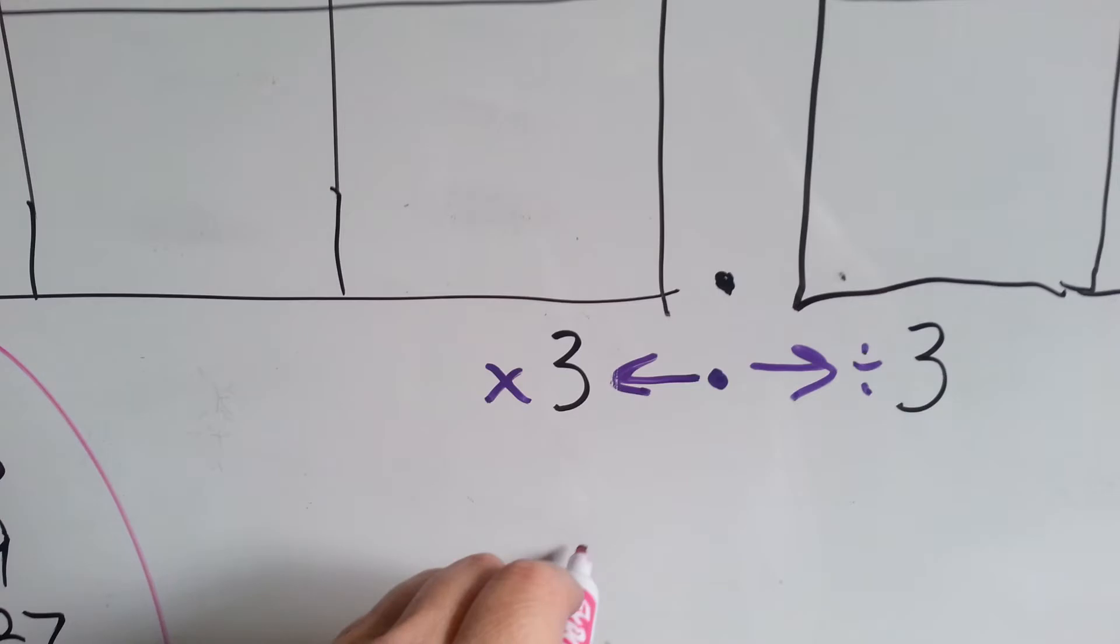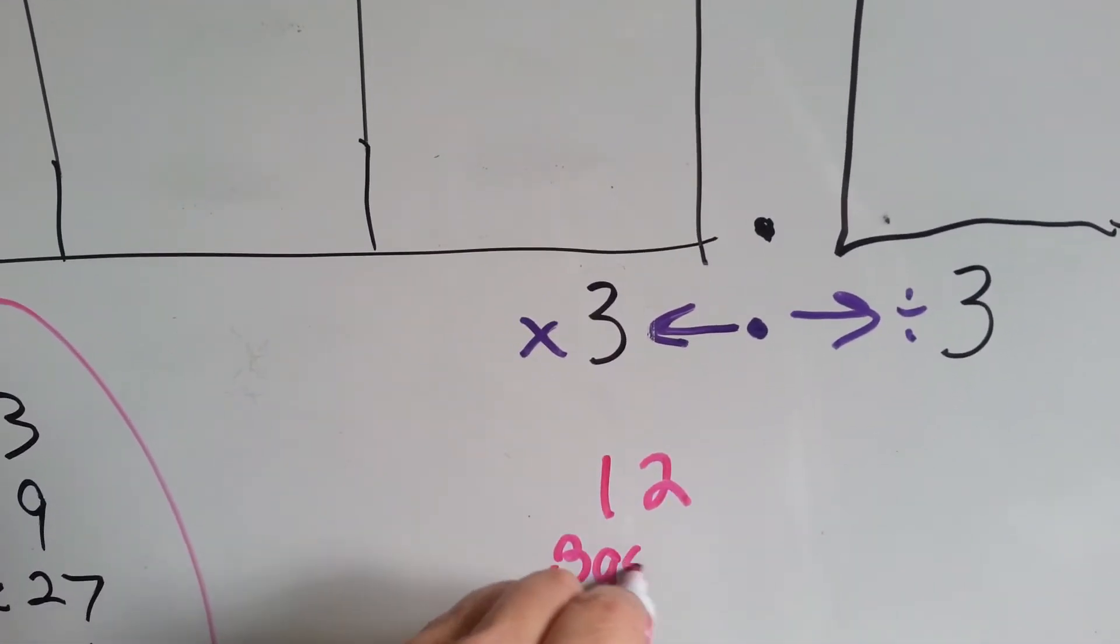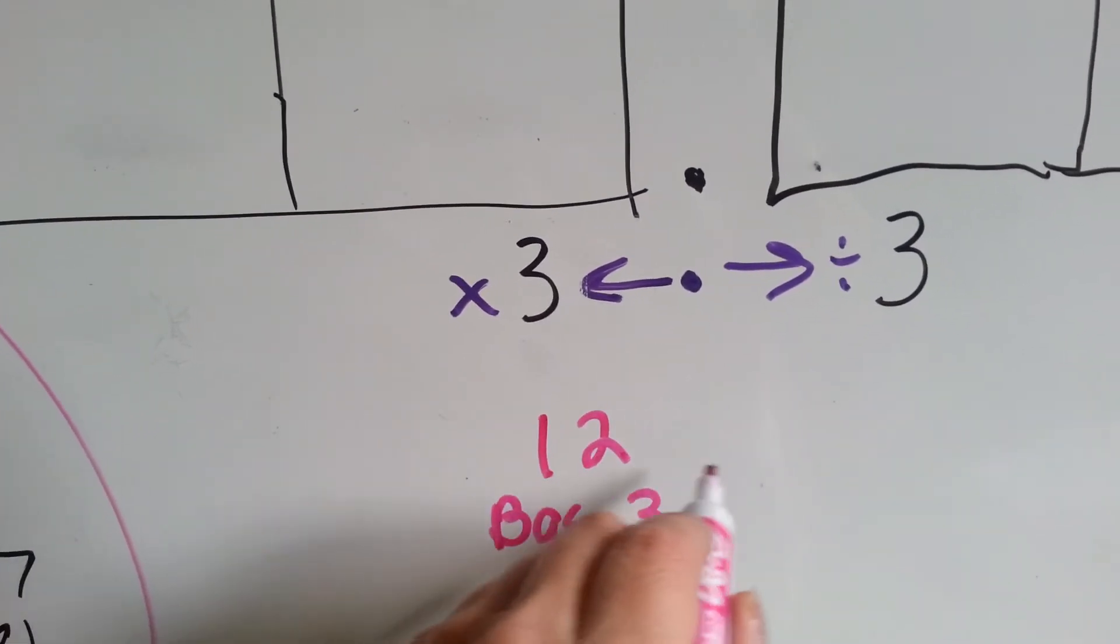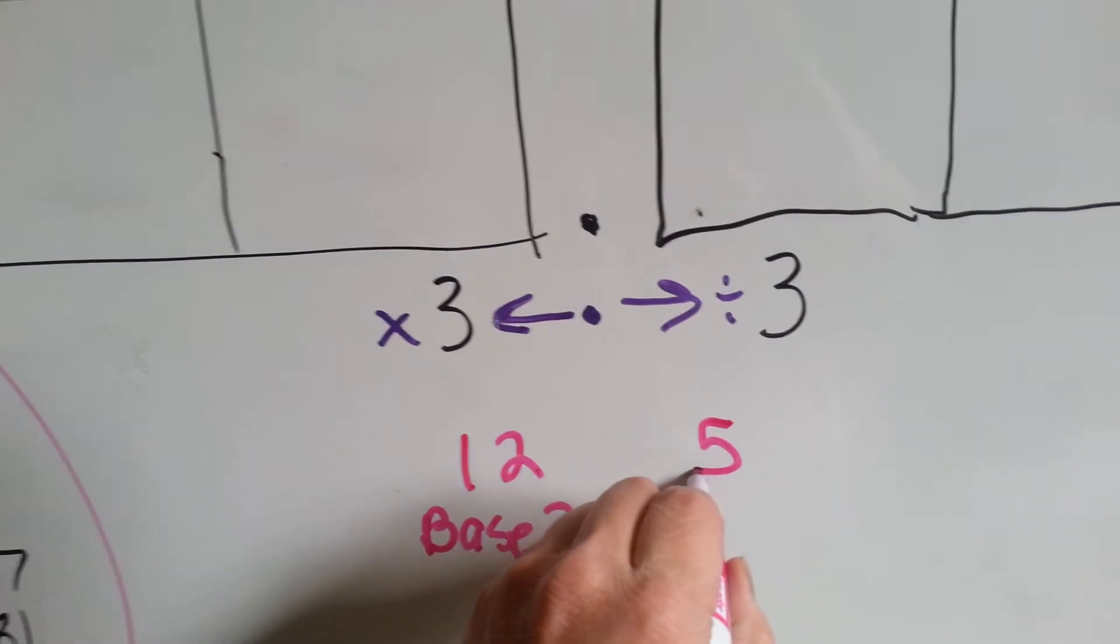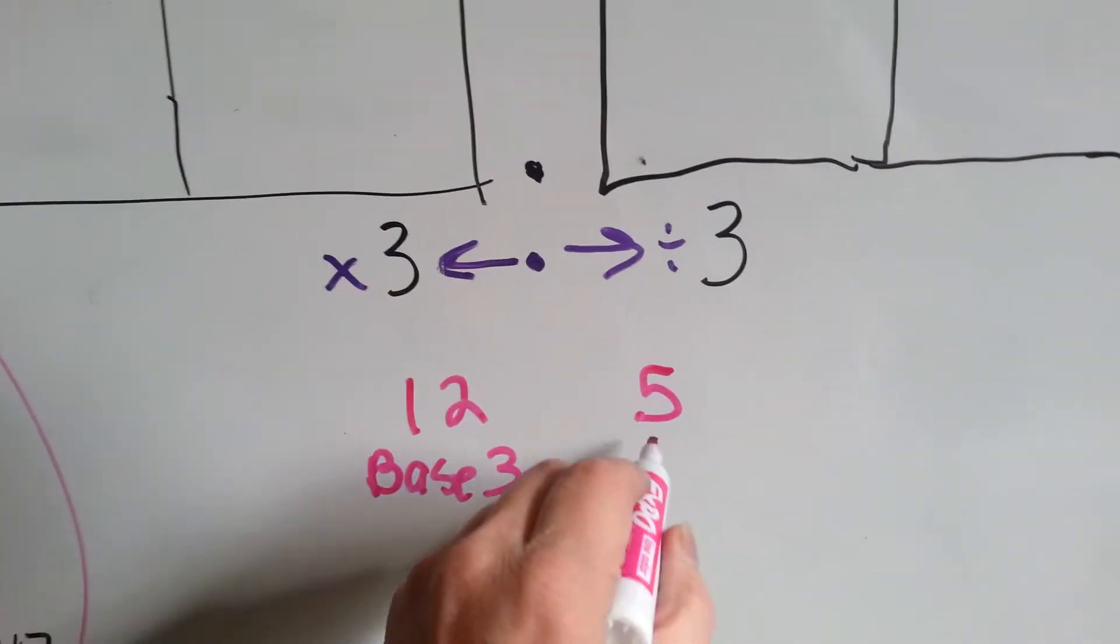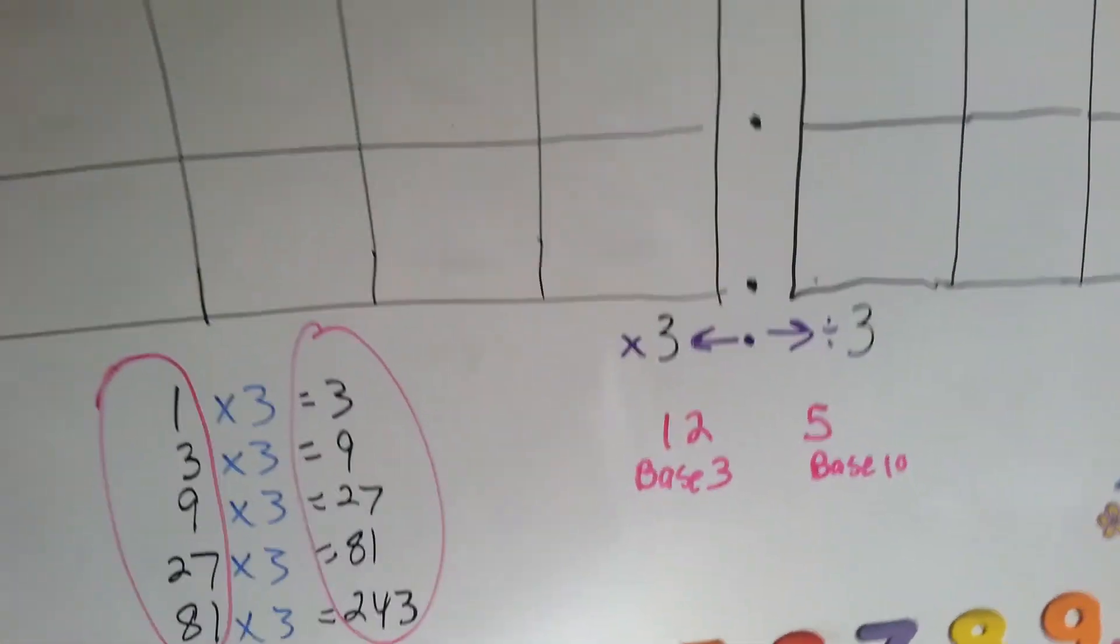Isn't that odd? So in base 3, 12 would be 5 in base 10. Isn't that something?